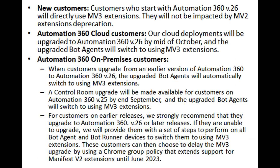Automation 360 cloud customers: our cloud deployments will be upgraded to Automation 360 v.26 by mid-October, and the upgraded bot agents will switch to using MV3 extensions. Automation 360 on-premises customers: when customers upgrade from an earlier version of Automation 360 to v.26, the upgraded bot agents will automatically switch to using MV3 extensions. A control room upgrade will be made available for customers on Automation 360 v.25 by end of September, and the upgraded bot agents will switch to using MV3 extensions. For customers on earlier releases, we strongly recommend upgrading to Automation 360 v.26 or later releases.